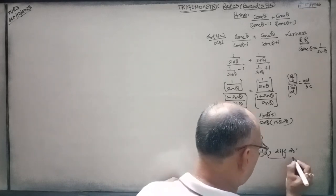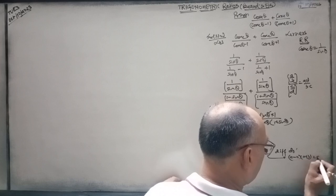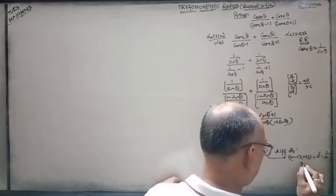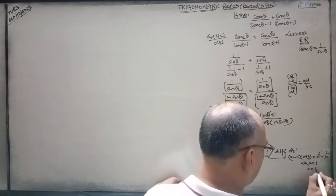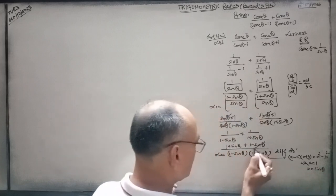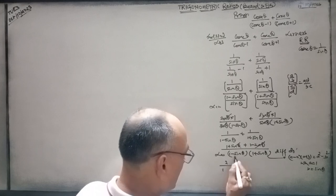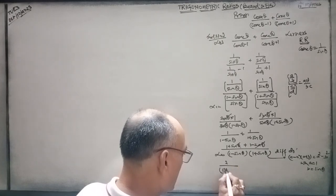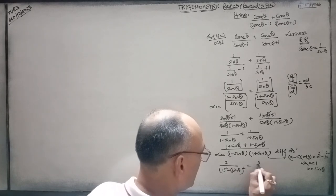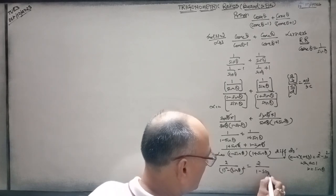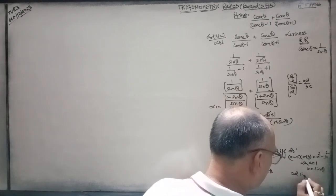Now in the denominator, you will apply: a minus b into a plus b equals a squared minus b squared, where a is one and b is sine theta. So one plus one is two in the numerator, upon a minus b into a plus b, which is one squared minus sine squared theta.